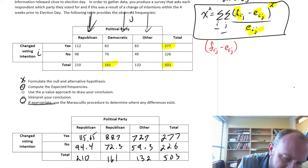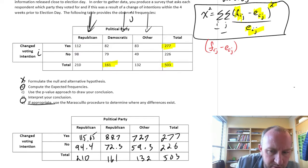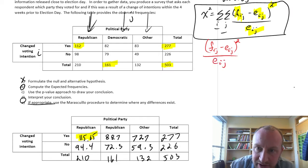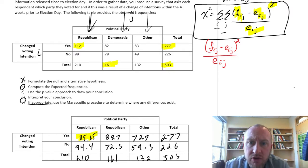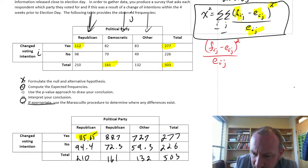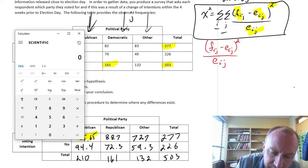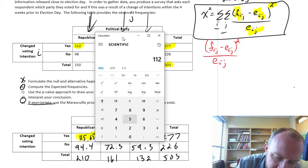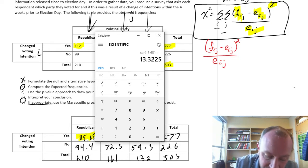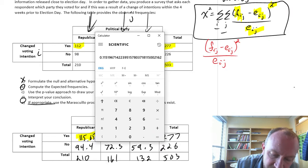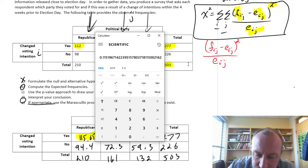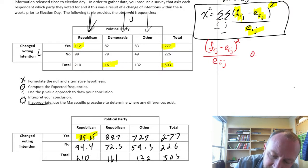So that would be the difference between an observed value and an expected value for all of those. And then we're going to square it. And then we're going to divide it by the expected value. And then we'll just add all of those up and that will give us our test statistic. So for the first one, this will be 112. I'll do this manually, but again, I'm going to skip through this. So the first one, our observed value is 112 minus the expected value, 115.65. So that's the difference. Then we square it, and then we divide it by the expected value, which is 115.65. So that gives us 0.115.